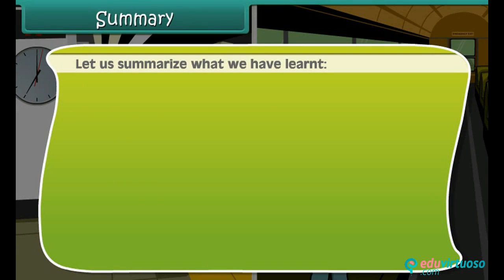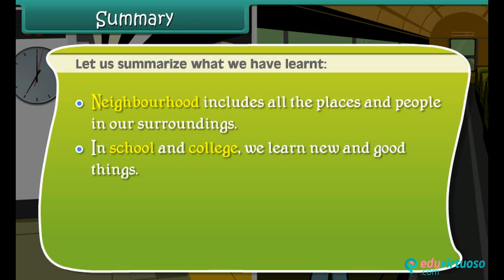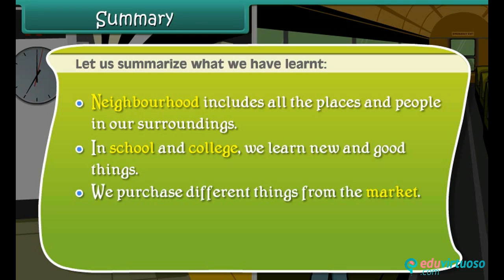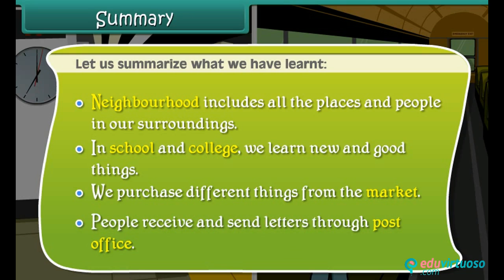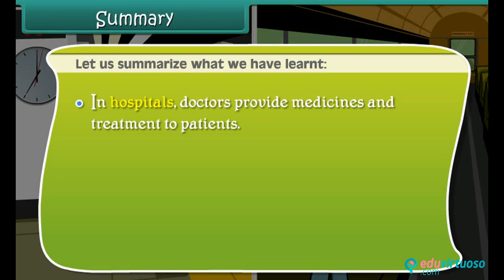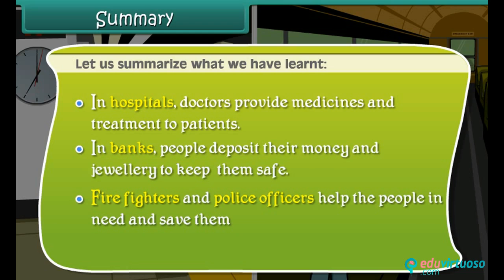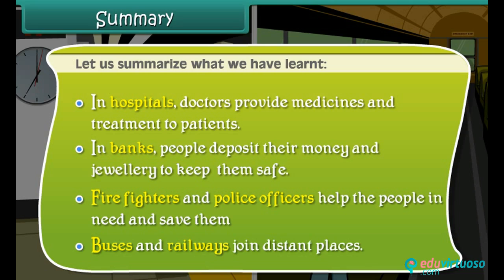Let's summarize what we have learned so far. Neighborhood includes all the places and people in our surroundings. In schools and colleges, we learn new and good things. We purchase different things from the market. People receive and send letters through the post office. In hospitals, doctors provide medicines and treatment to patients. In banks, people deposit their money and jewellery to keep them safe. Firefighters and police officers help people in need and save them. Buses and railways join distant places.